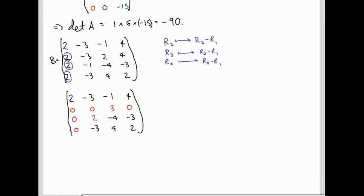-4 minus -1 that's -3, and -3 minus 4 is -7. This last row -3 minus -3 that's 0. 4 minus -1 is 5 and 2 minus 4 is -2.